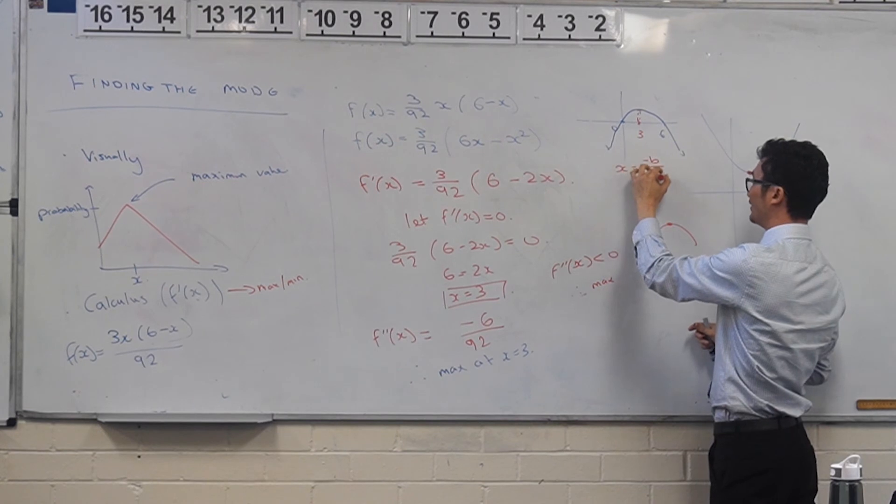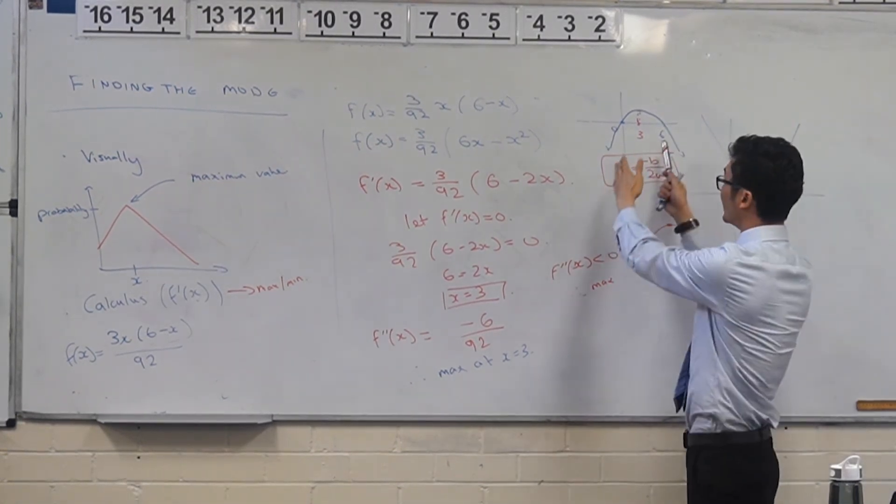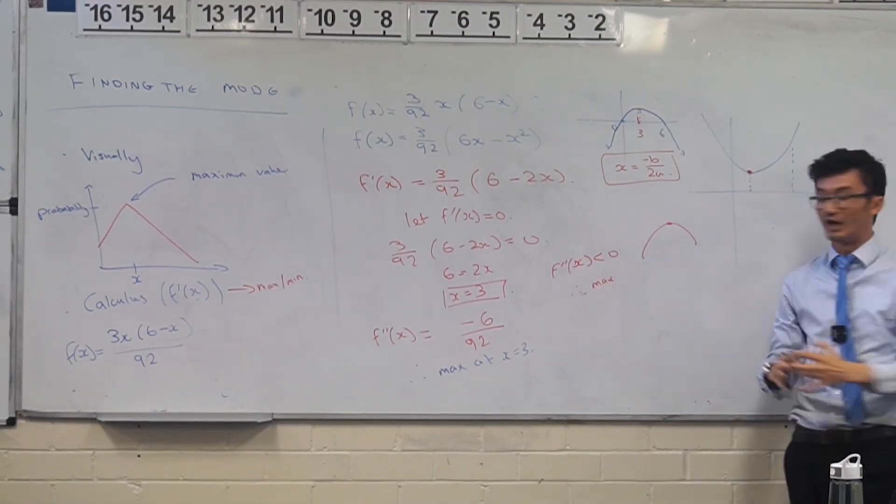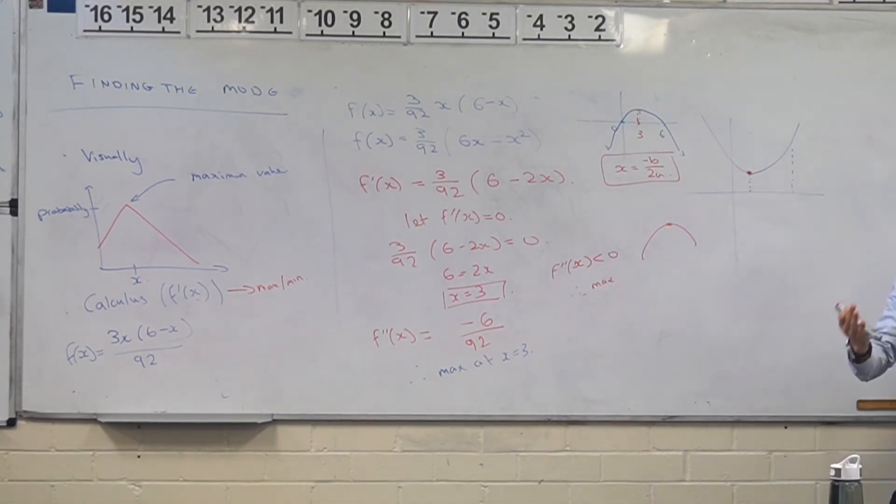There is actually a formula that lets you determine that: x equals to minus b over 2a if you have the quadratic equation in a particular form. But I'm okay as well if you just sketch out what this guy looks like and you make it very clear. So either use calculus if you're okay with that, or you can use a graphical approach if you're comfortable with graphing.